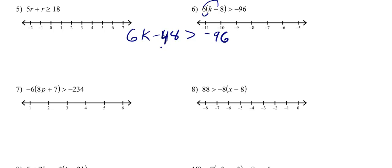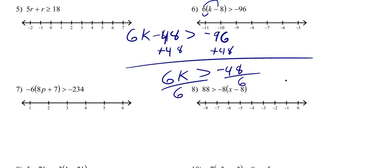We're going to add 48 to both sides. So now we've got 6k, and what we know about 6k is it's going to be bigger than a negative 48. So you've got 6 times k, the inverse operation of multiplication is division. So we're dividing both sides by a positive 6.